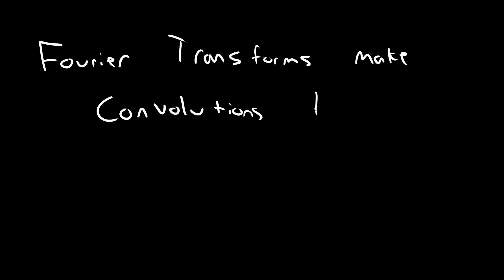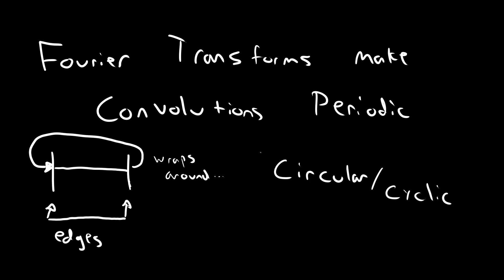There is a catch though. If you want to perform a convolution in this way, you need to use a Fourier transform, which makes the operation periodic. This means that the convolution is not linear like before, but instead circular or cyclic.